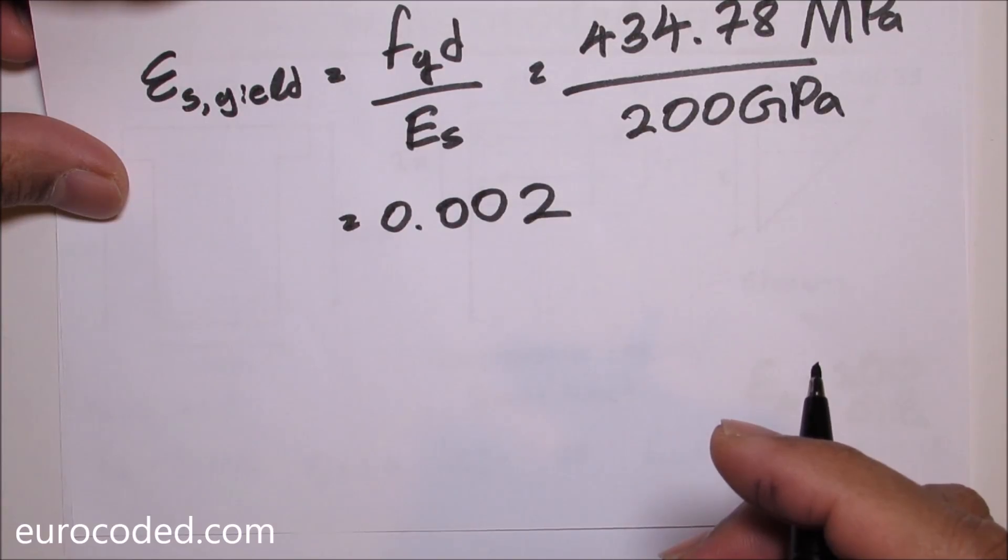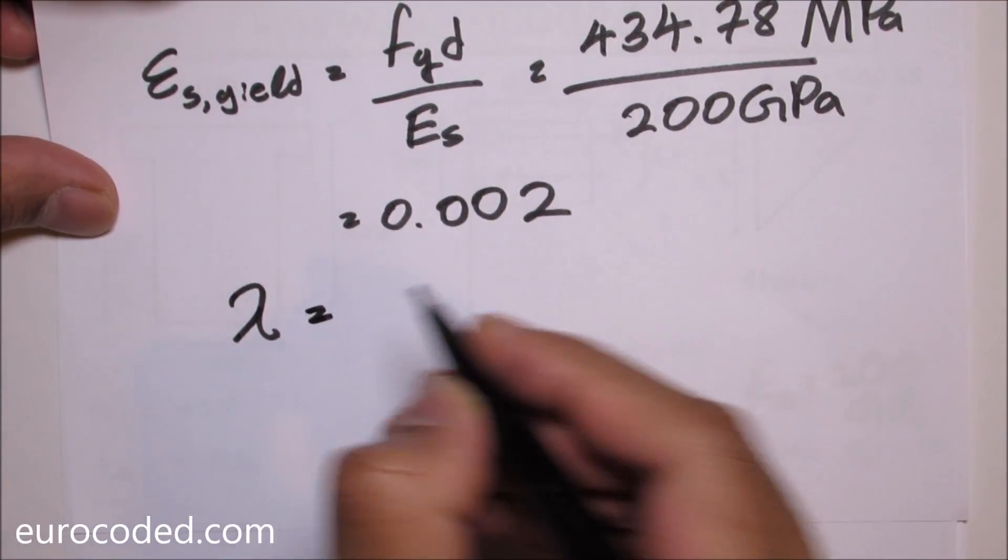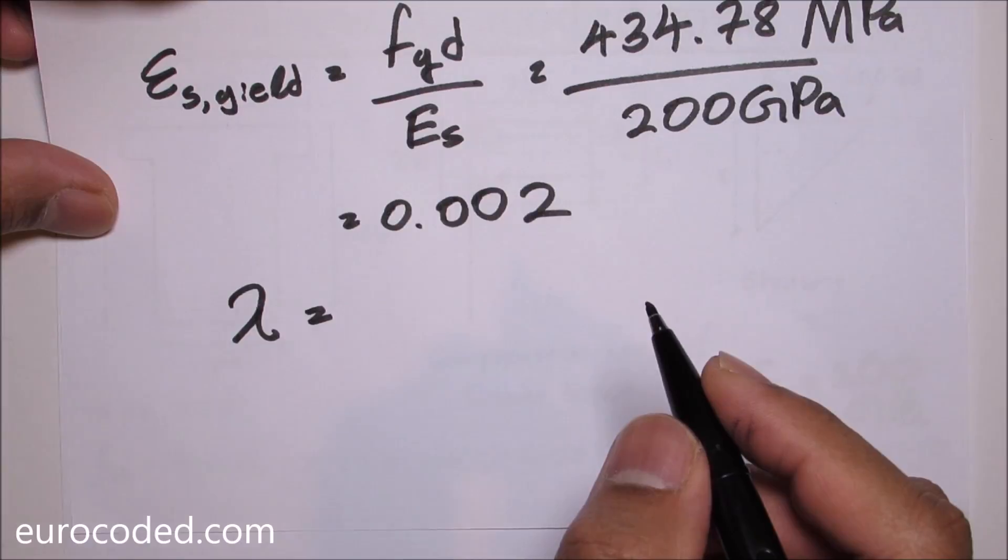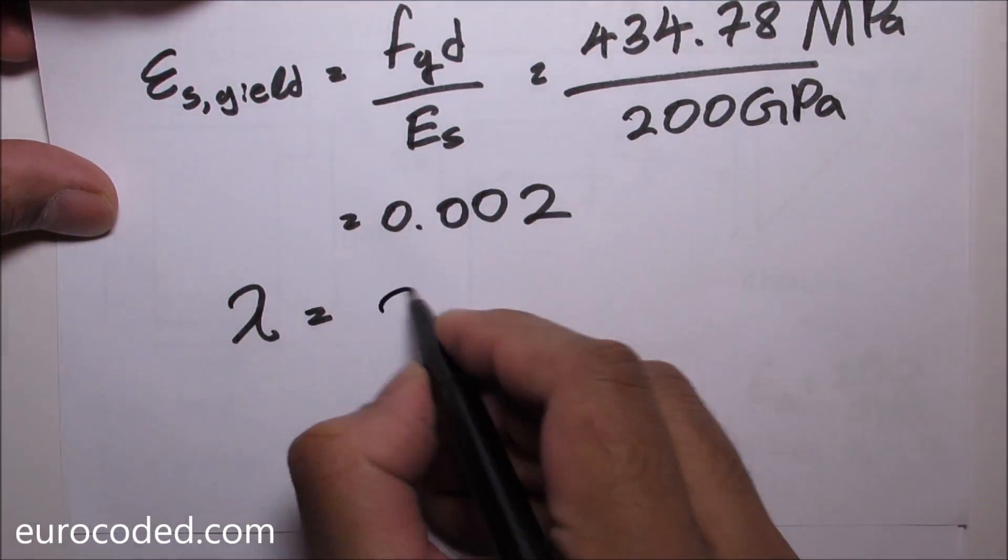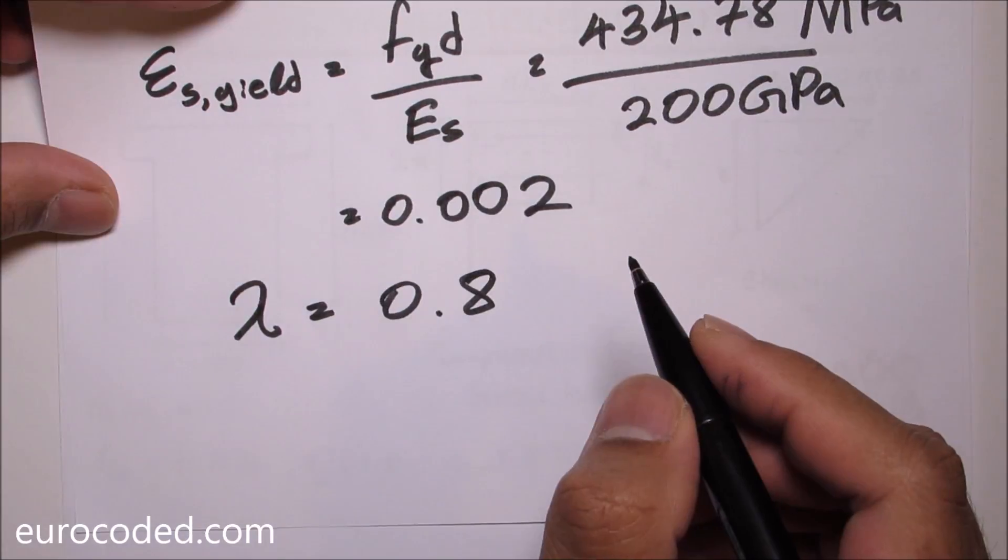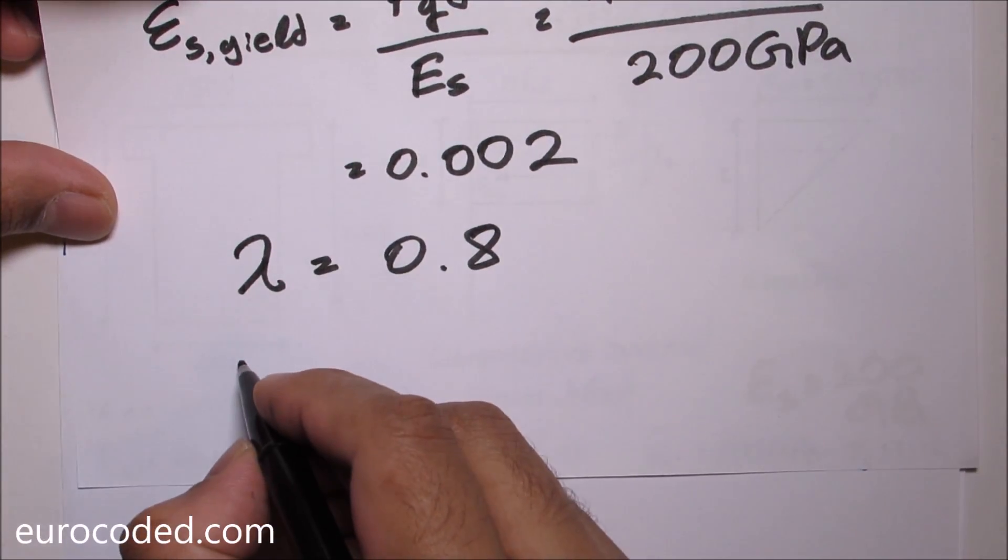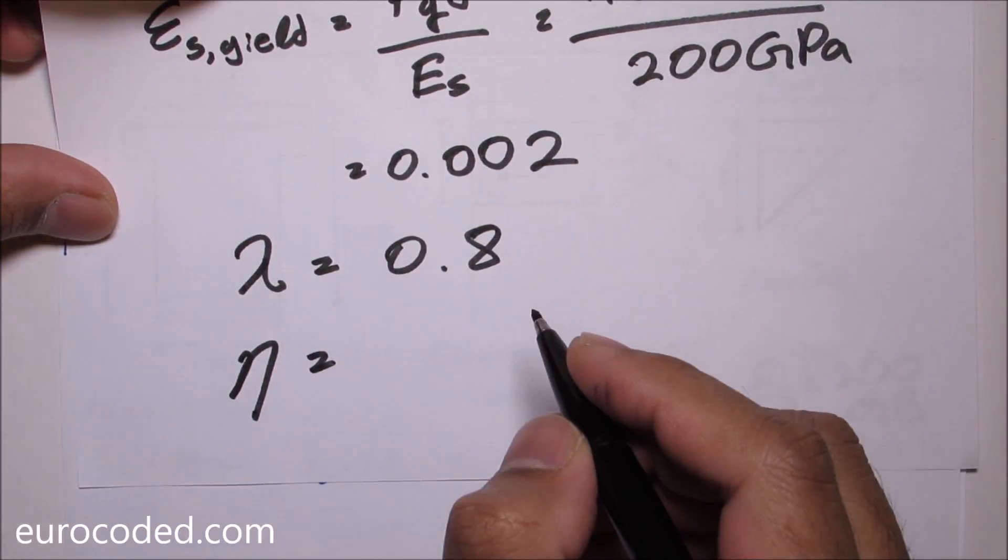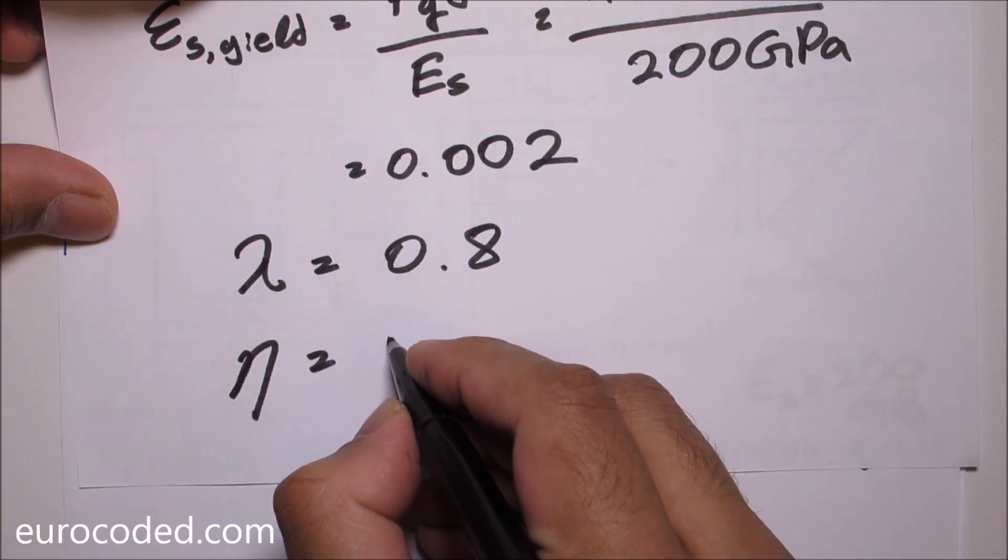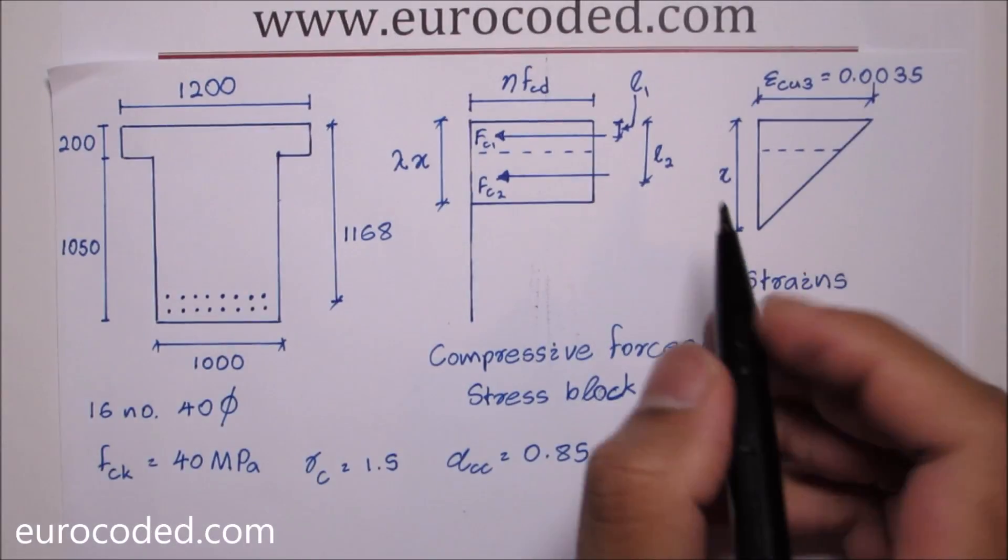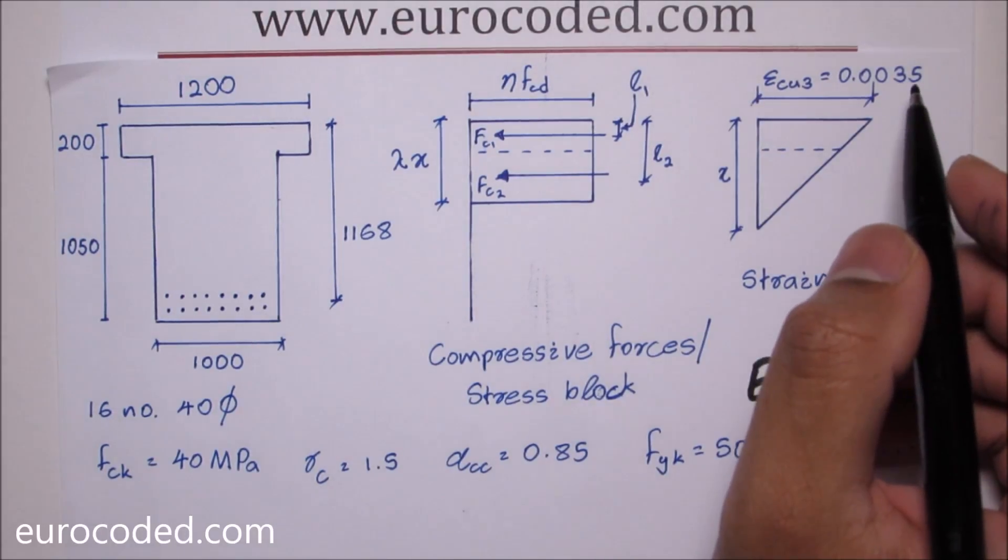Effective height of compression zone factor which is lambda, if our FCK is below 50 megapascal then our lambda is going to be 0.8. And the effective strength factor eta for FCK below 50 megapascal is going to be 1. And I've already mentioned epsilon cu3 is 0.0035.